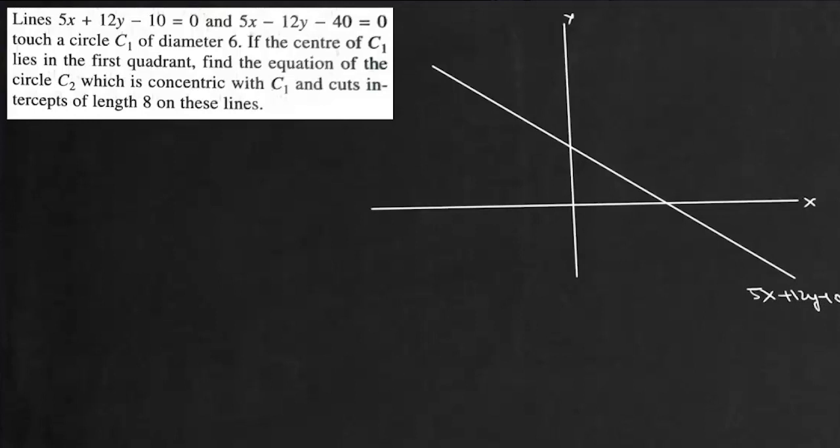Now for the second line, x-axis intercept is at 8,0 and y-axis intercept is at 3 point something but in the negative axis. So this line will be drawn something like this. Now slope of this first line is minus 5 by 12 and slope of the second line is 5 by 12.